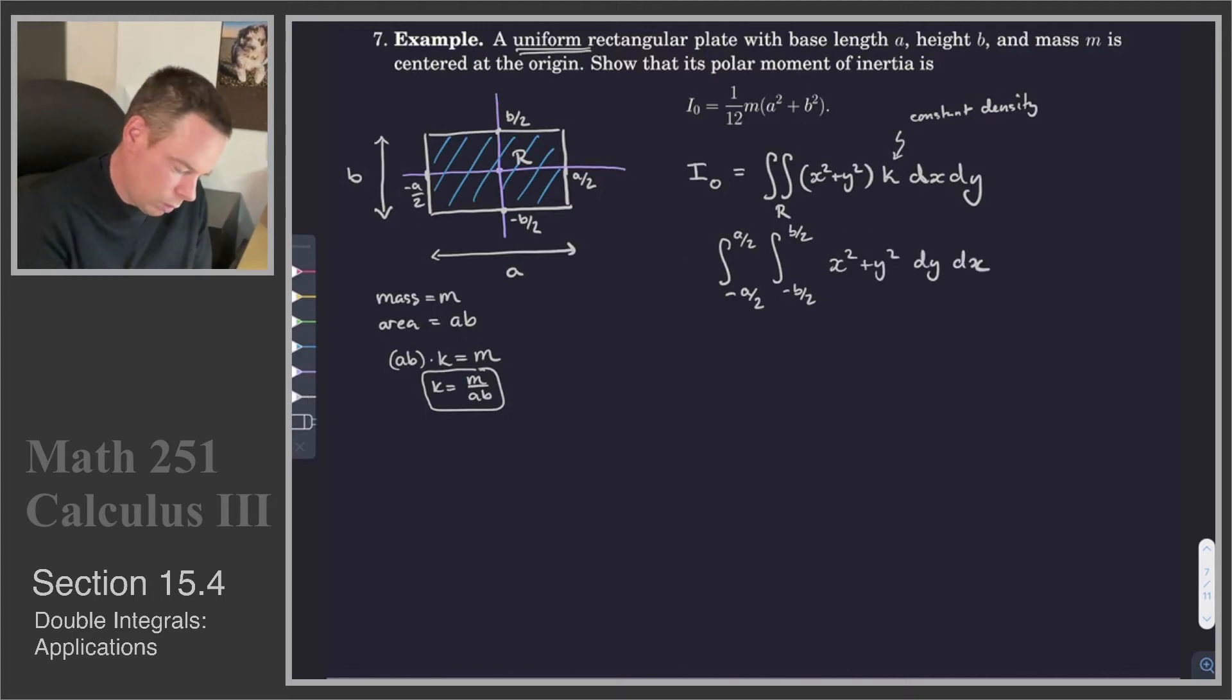And I'll bring that K out front. I'll just leave it as a K so I don't have to keep writing M/(AB). So that's K times the integral of -A/2 to A/2. The integral with respect to Y, that's x²y + (1/3)y³ from -B/2 to B/2.